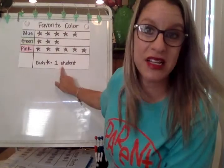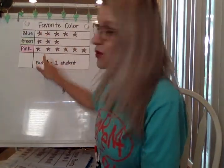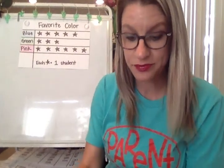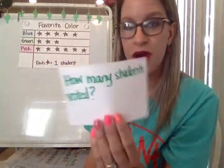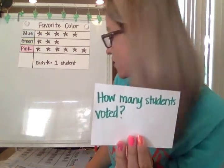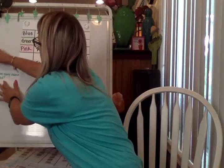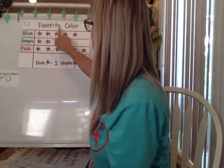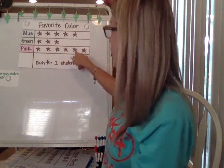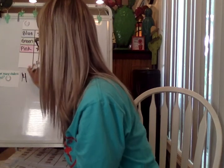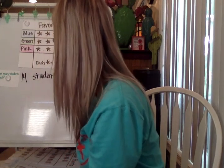Each star represents one student. So if you count up all of these stars, it will tell you how many students are represented. That's one of our questions — how many students voted when we were talking about their favorite color? Let's count: 1, 2, 3, 4, 5, 6, 7, 8, 9, 10, 11, 12, 13, and 14. So 14 students voted.